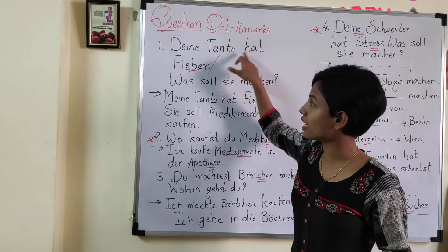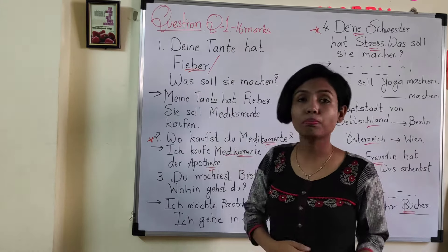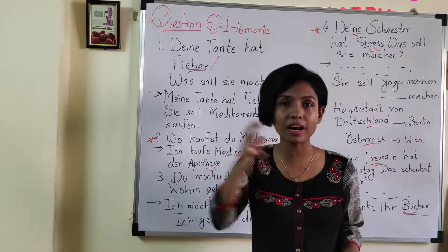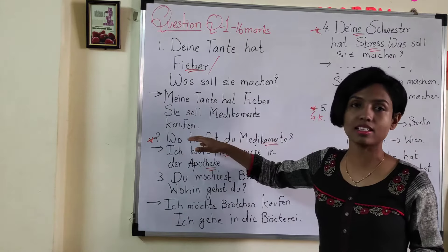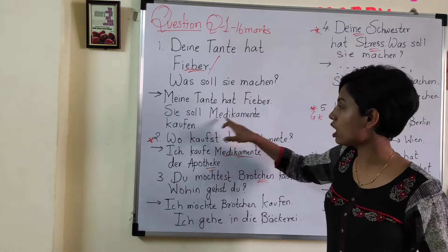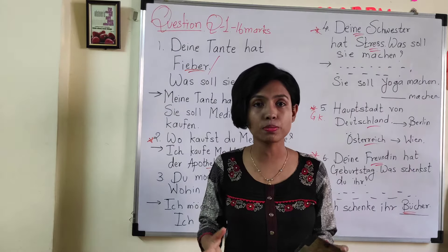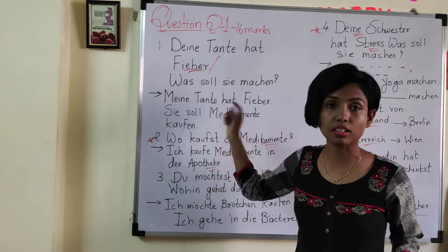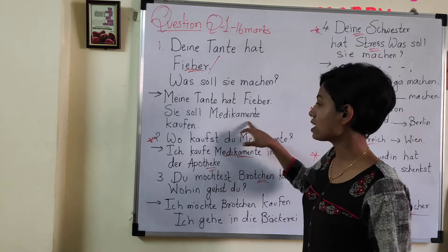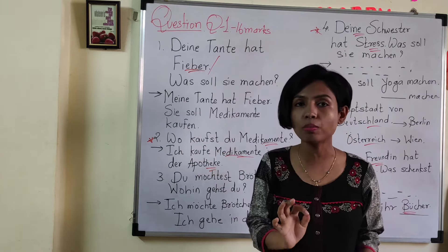Same question: Deine Tante hat Fieber. Here it could instead be Deine Tante hat Kopfschmerzen or Bauchschmerzen. So the answer will be Meine Tante hat Fieber, or Meine Tante hat Kopfschmerzen, Meine Tante hat Bauchschmerzen. And then your main answer: Was soll sie machen? — what should she do? Sie soll Medikamente kaufen. Please mention the word Medikamente with a capital M. So two verbs are in the sentence — one you are conjugating and one you put at the end in its original infinitive form.